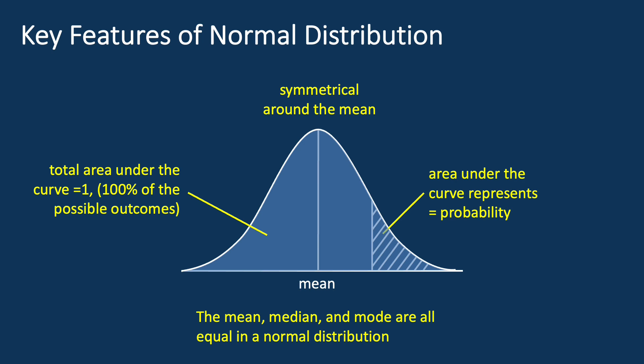Fourth, the mean, median, and mode are all equal in the normal distribution. Now let's look at an example to help you better understand the concept.